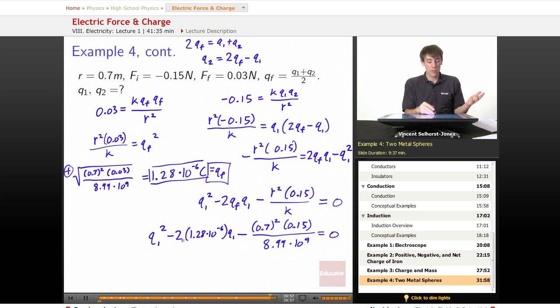We've got some squared number. We've got some other number in front of Q1 squared, some number in front of Q1 by itself, and then some constant. We can figure out what each one of these values is, and we could either plug it into the quadratic formula, or if you've got some sort of powerful calculator, you could use an algebraic solver on that calculator to solve this whole equation.